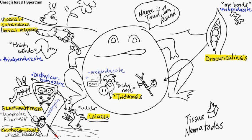Dracunculiasis, or guinea worm. Infection is caused by ingesting infected copepods in fresh water. Copepods are crustaceans — so fresh water, crustaceans. The female lives in the subcutaneous tissue. You will notice the head of the worm in the skin ulcer. Treat with mebendazole or by extracting the worm by winding it upon a stick.